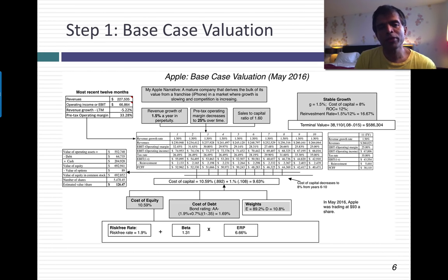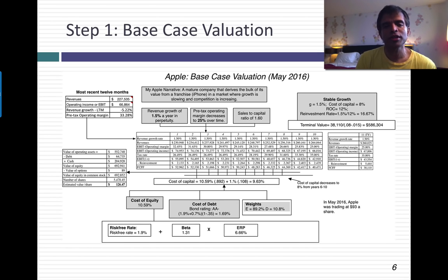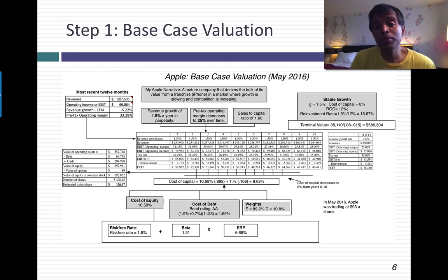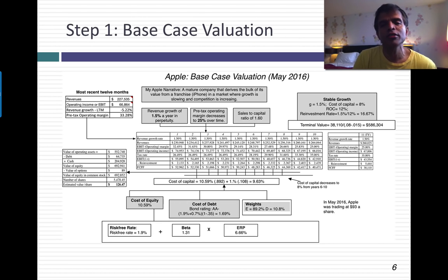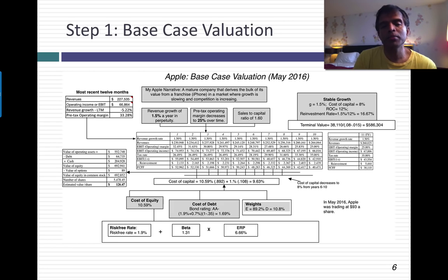My story for Apple is that it's a beyond-mature company with competition eating away into its margins, but it's got a substantial cash balance that acts as a ballast on its value. Margins, which are right now 33%, are expected to continue to drift down to 25% over the next decade. I've assumed they will need to reinvest a dollar for every $1.60 in revenues. I gave Apple a cost of capital of 9.63% — at about the 80th percentile for U.S. companies — reflecting concerns that Apple, despite its size and great margins, is a technology company subject to sudden shifts. With those assumptions, the value I got for Apple was about $126, higher than the stock price of $93 at the time.